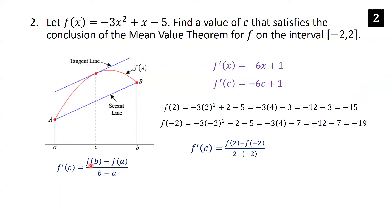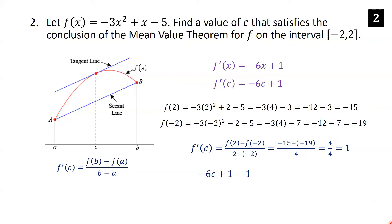Now we set f prime of c equal to f of 2 minus f of negative 2 over 2 minus negative 2. Substituting, that's negative 15 minus negative 19 over 4, which is negative 15 plus 19 over 4, which is 4 over 4, which equals 1. So we set f prime of c equal to 1. Since f prime of c is negative 6c plus 1, subtracting 1 from each side gives negative 6c equals 0, so c equals 0.